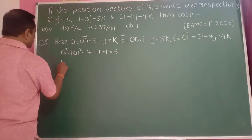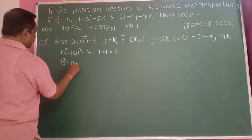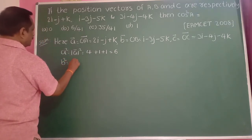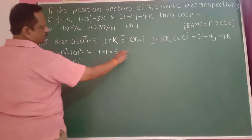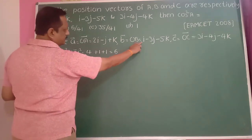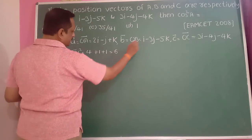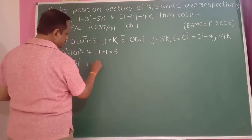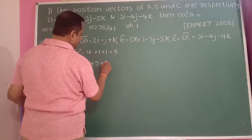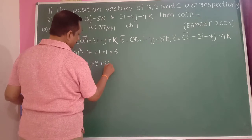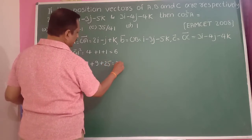And B squared is nothing but modulus of B̄ squared, that is equal to 1 squared is 1, plus 3 squared is 9, plus minus 5 squared is 25. Therefore, B squared is 35.